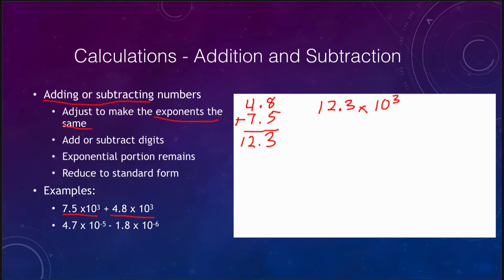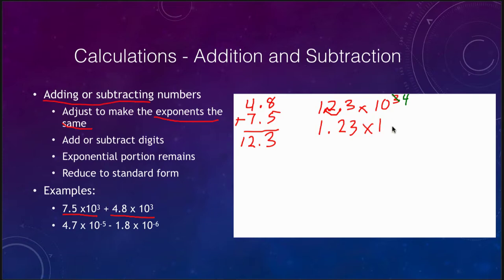So our answer is 12.3 times 10 to the third power. However, this is not in standard form — we want only one non-zero digit to the left of the decimal point. We move the decimal one place to the left and adjust the exponent from 3 to 4. Our final answer is 1.23 times 10 to the fourth power.